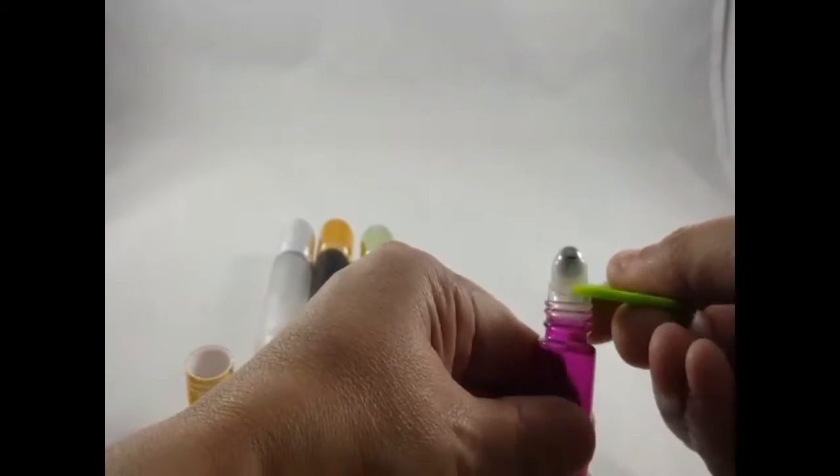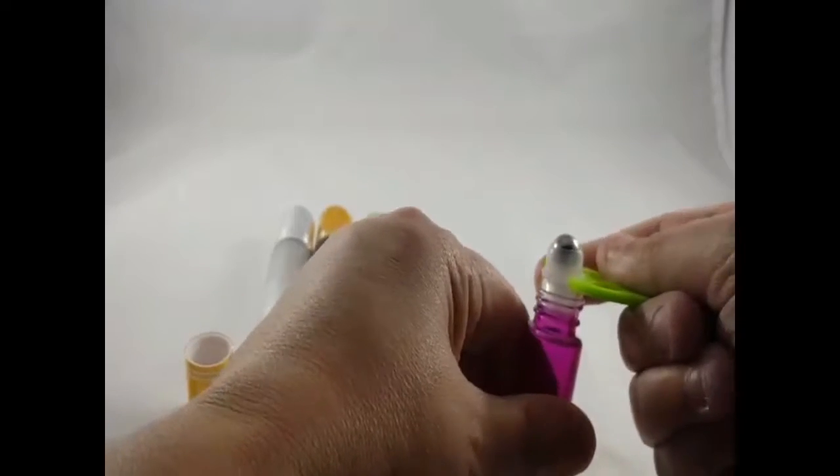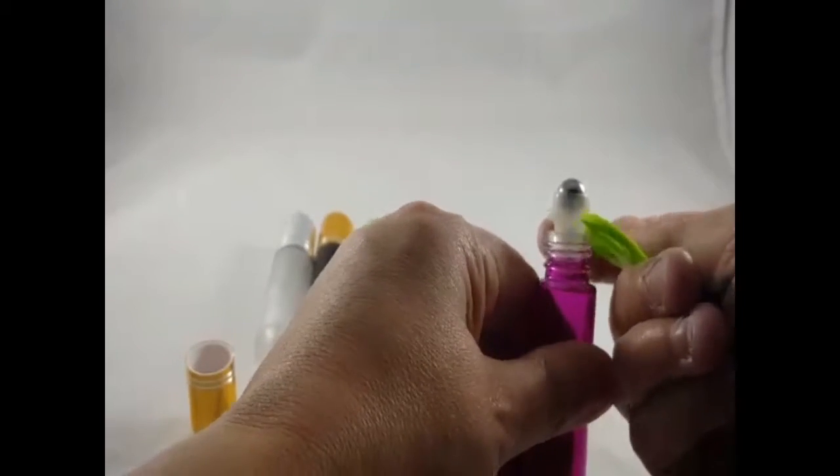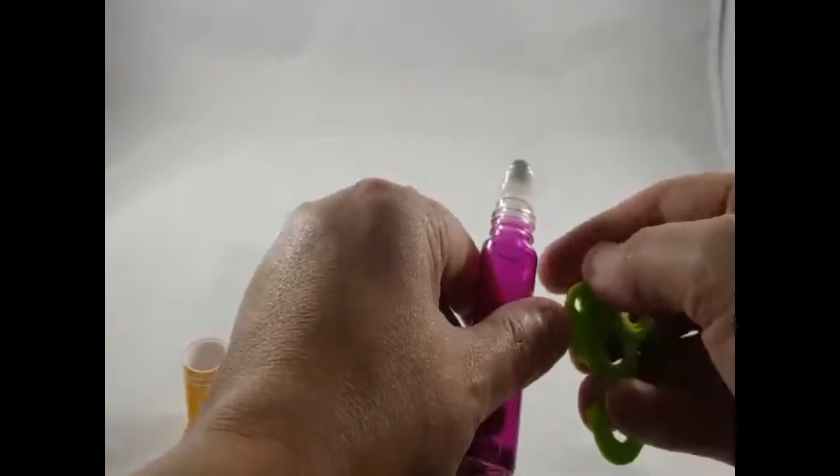The same thing when you're putting the ball back in, you're going to want to use the side that has the ridge on it to help you pop that roller bottle back into place.